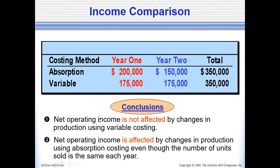The conclusion is that net operating income is not affected by changes in production under variable costing, because fixed manufacturing overhead is expensed entirely in the period incurred. However, net operating income is affected by changes in production under absorption costing, even if the number of units sold remains the same each year. The reason is that differences between production and sales create ending inventory, and the basis for cost of sales is units sold, not units produced.